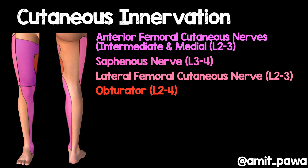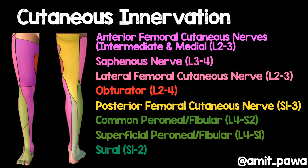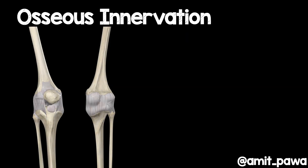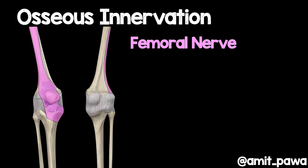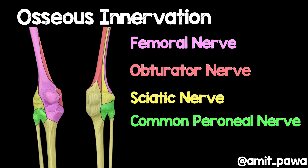Adding in branches from the obturator nerve, the posterior femoral cutaneous nerve, and the rest of the sciatic nerve, you can see the cutaneous innervation of the knee is complex. Osseous innervation is also very important, and you'll see why the femoral nerve is so important and why femoral nerve blocks were so effective for analgesia after knee arthroplasty. The obturator nerve and sciatic nerve also have a role here.